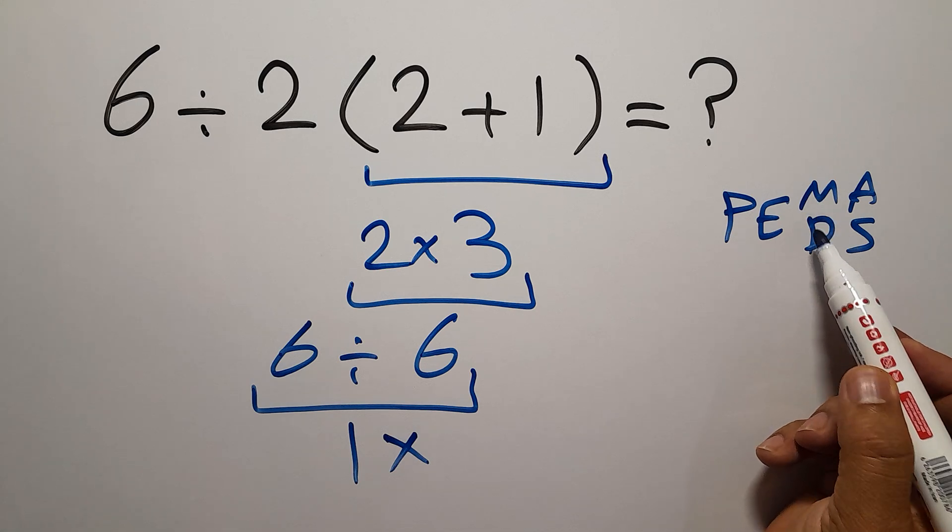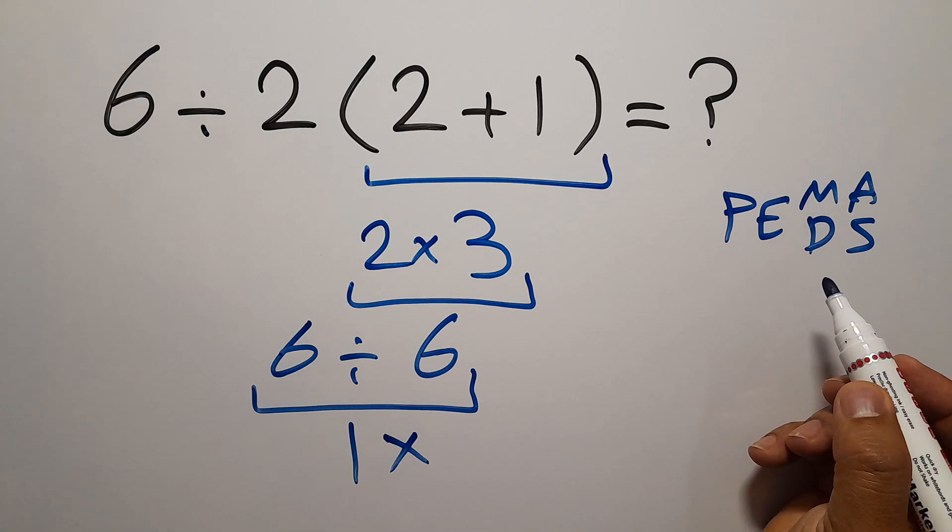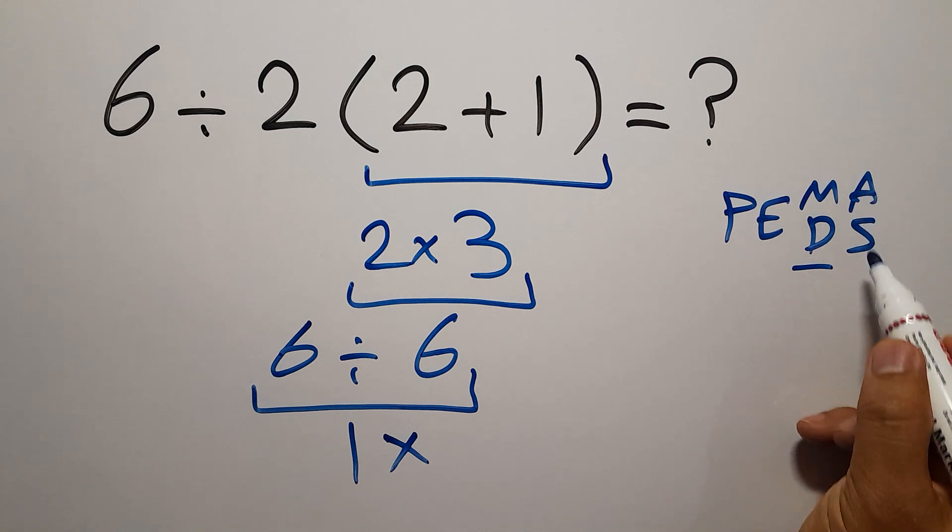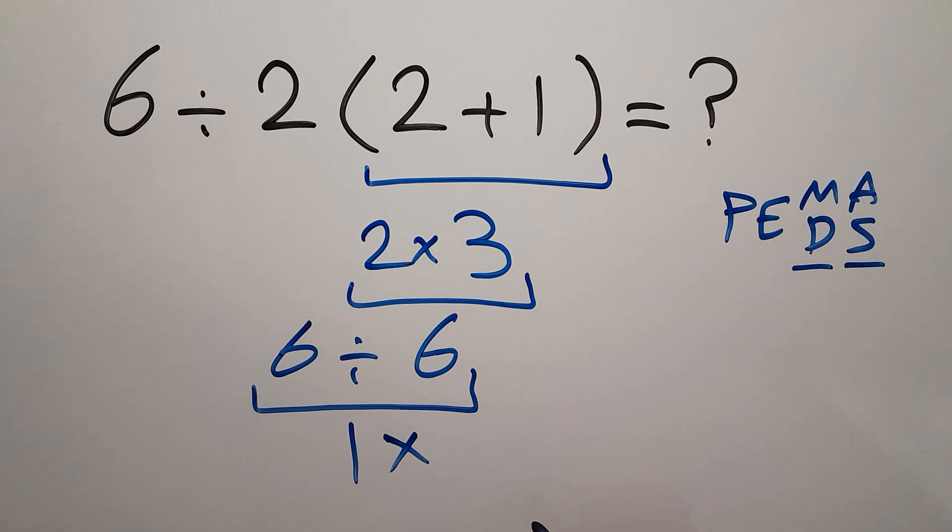Remember that multiplication and division have equal priority, and we have to work from left to right. And the same applies to addition and subtraction.